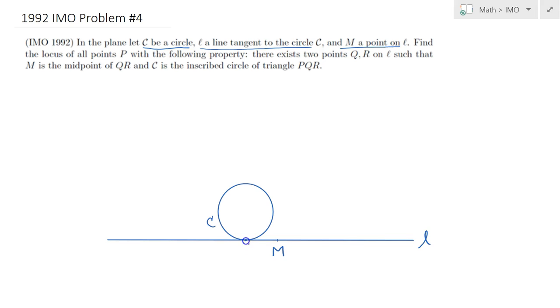Now we are told that we would like to find the locus of all points P which satisfy this property: that there exists points Q and R on L such that M is the midpoint of QR and C is inscribed inside the triangle PQR. So let's start by first figuring what happens if really such points Q and R exist.